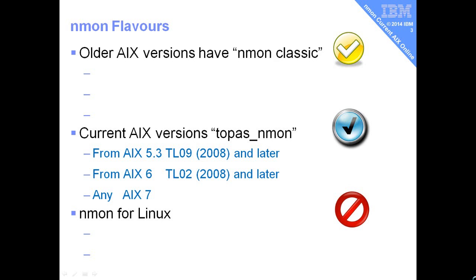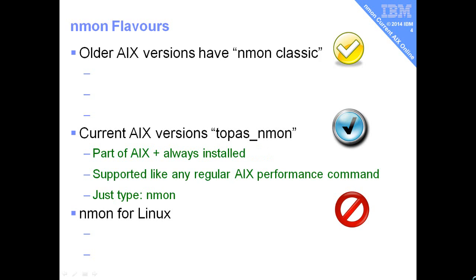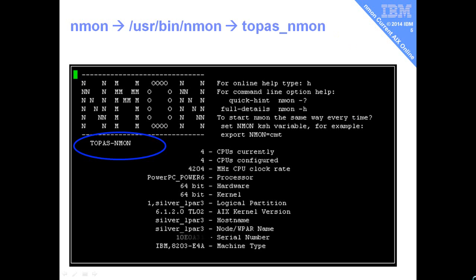It was in 2008 where NMon became integrated into AIX itself. Topaz NMon is installed as part of AIX as a default install — it's supported like any other regular AIX performance command. You just type in NMon and it will start up. When you type NMon, it actually runs a script called /usr/bin/NMon, and that starts up the binary called Topaz NMon. We actually have Topaz and NMon commands in the one binary, and we can flip between the two modes, which is quite convenient.